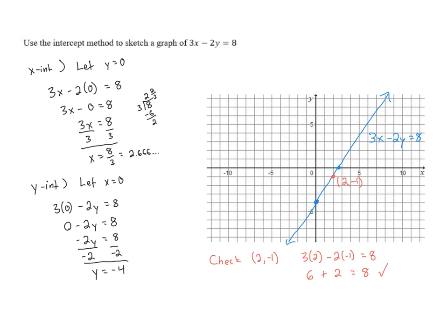We know that this is true. 6 plus 2 does equal 8, so that tells us that that point does satisfy the equation, so it should be on the line. And that helps verify that we've probably graphed the right line. So there we go.